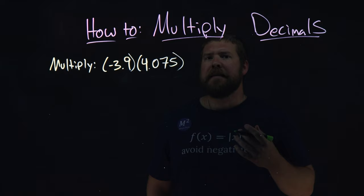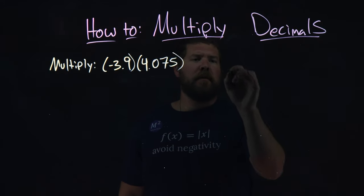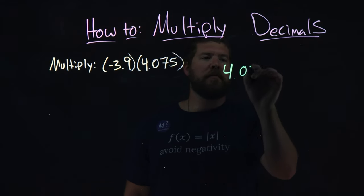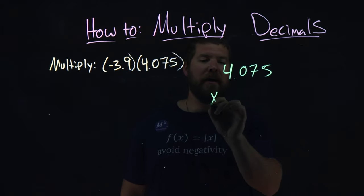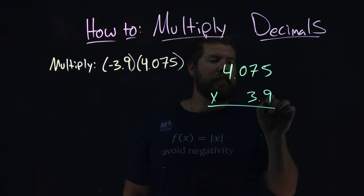So, let's go set this up, and we're going to have the 4 on top. So, we have 4.075, and we're multiplying that by 3.9.